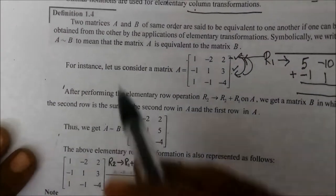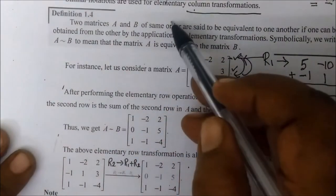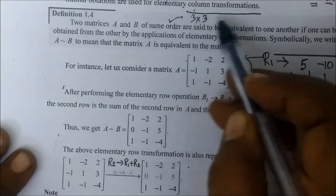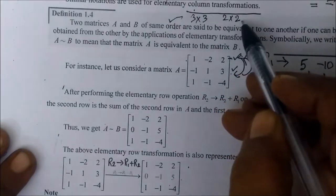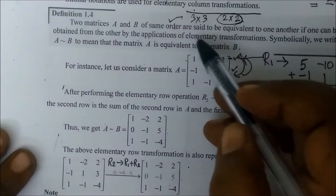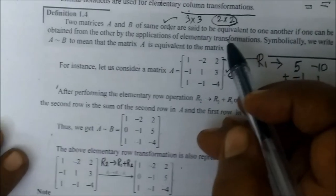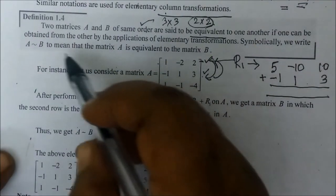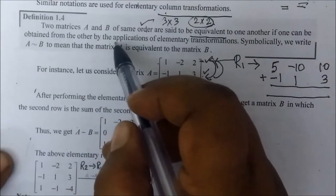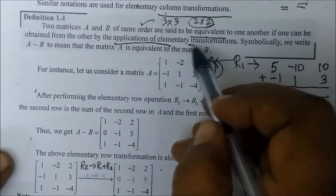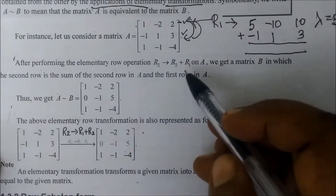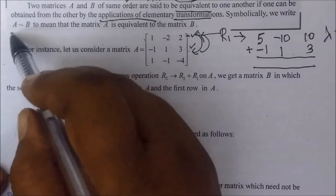Definition 1.4: Two matrices A and B of the same order — for example, two 3×3 matrices or two 2×2 matrices — are said to be equivalent to one another if one can be obtained from the other by the application of elementary transformations. If we apply these three elementary operations, we say that A is equivalent to B.